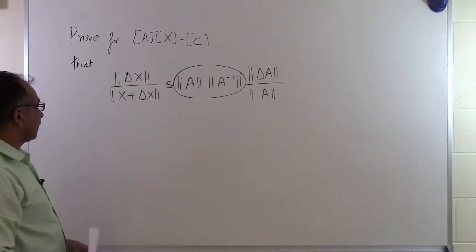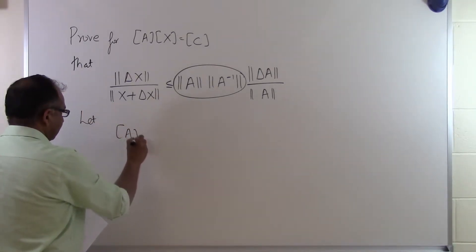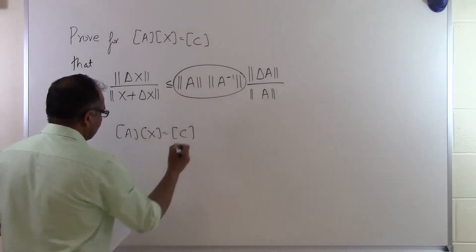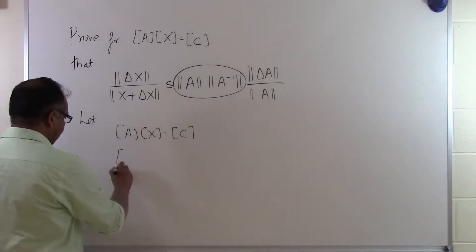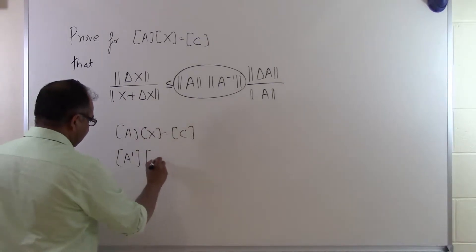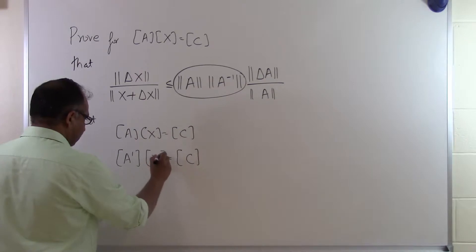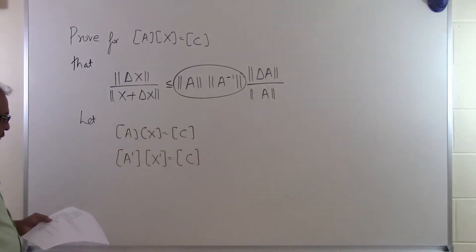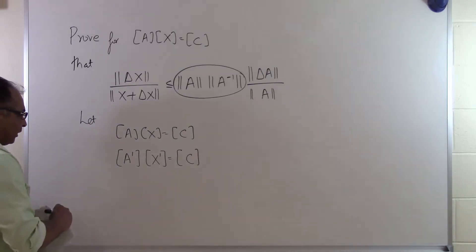So let's go ahead and see how we can prove this. Let A times X be equal to C — this is a given set of equations. Now what we are doing is making a change to the coefficient matrix, changing A to A prime. If we keep the right-hand side the same, it is going to result in a change in the solution vector, and let's call it X prime. Now let's define two different matrices.